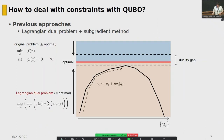Another approach is the Lagrangian dual problem plus the subgradient method. Suppose we want to minimize f(x) subject to a constraint. We can formulate the Lagrangian dual problem, which consists of a linear term added with the constraint term. A key feature is that the solution from the original problem always has a cost function greater than or equal to the optimal, whereas the Lagrangian dual problem yields a solution that is provably lower than the optimal — because it is a relaxation.